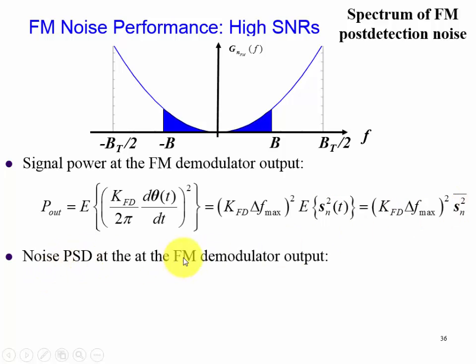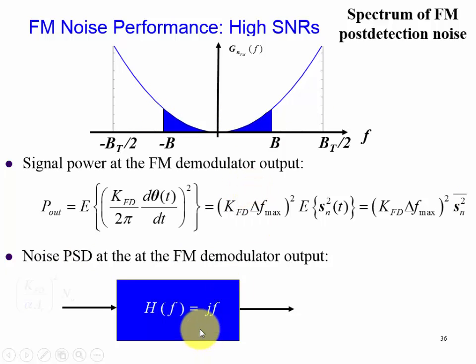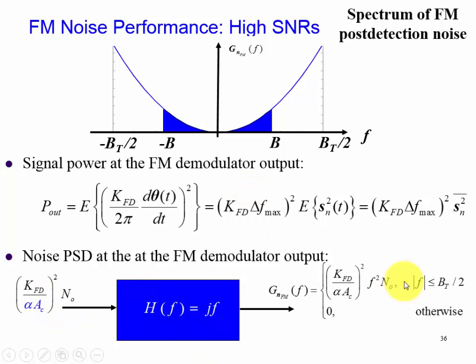Next is our noise power spectral density. We can see that it's a parabolic shape governed by this. And so now when we finish calculating, we're going to integrate this expression from minus B to B.